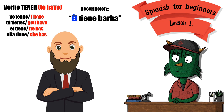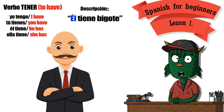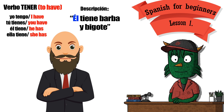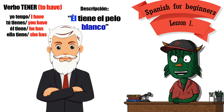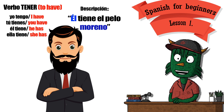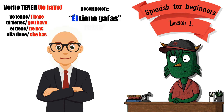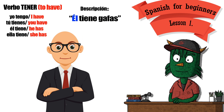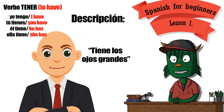Él tiene barba. Él tiene bigote. Él tiene barba y bigote. Él tiene el pelo castaño. Él tiene el pelo blanco. Él tiene el pelo moreno. Él tiene el pelo rubio. Él tiene gafas.